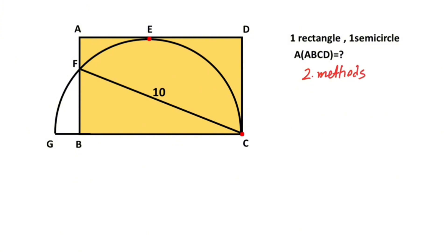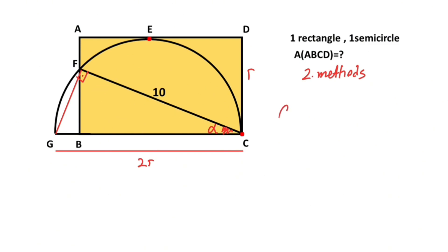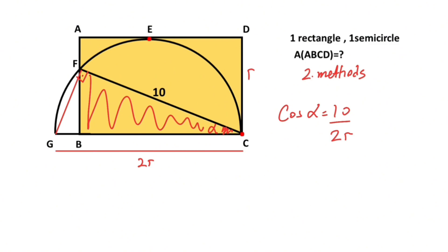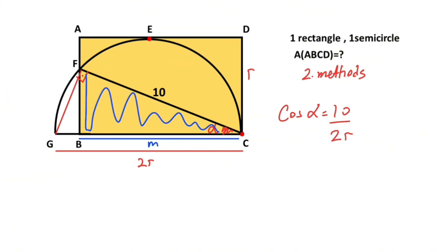Now we will calculate the area using the second method. Let's call the diameter of the semicircle r. If we connect these two points, here is 90 degrees. Let's call here alpha. If you focus on triangle FGC, for this triangle if you calculate cosine alpha, cosine alpha equals 10 over 2r. Also, if you focus on this other triangle, let's call this side m, cosine alpha equals m over 10.